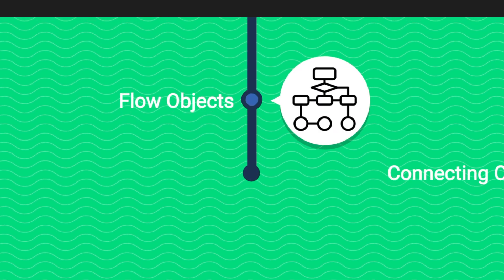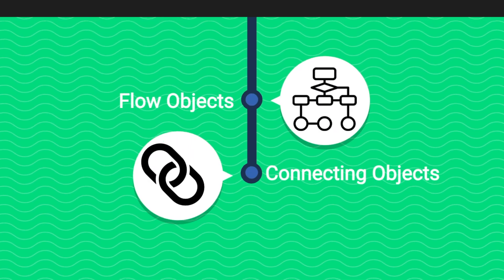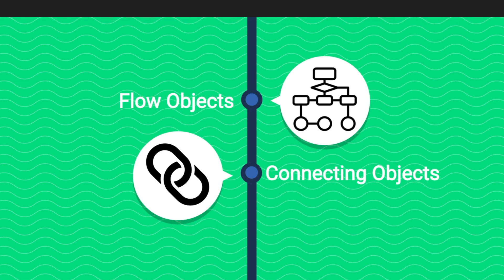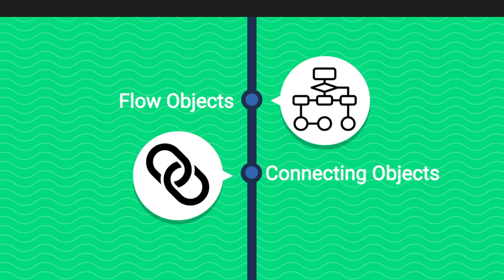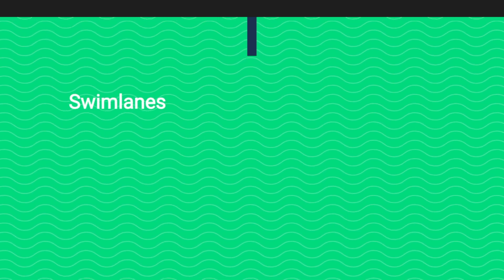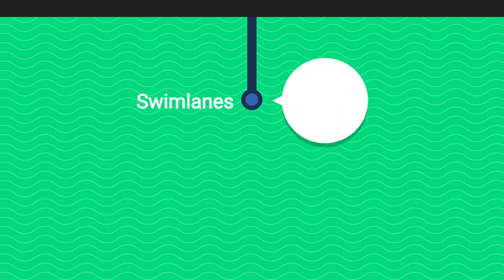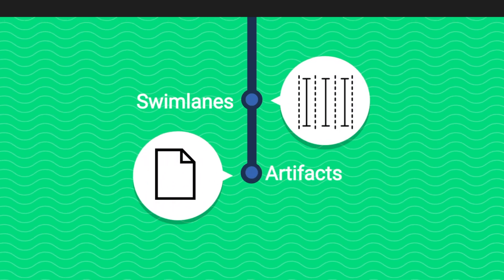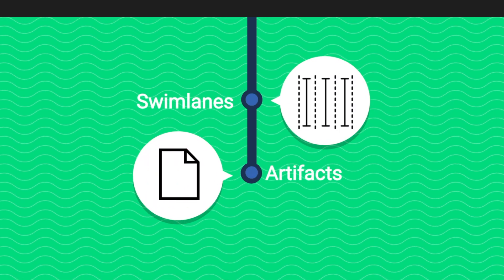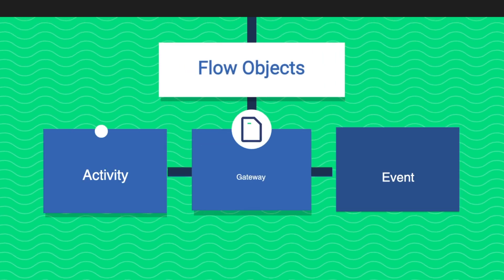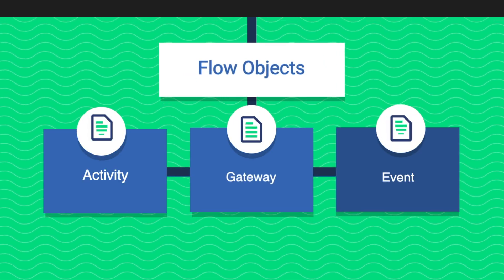A business process diagram consists of four element types: flow objects, connecting objects, swim lanes, and artifacts. The flow objects are activities, gateways, and events.